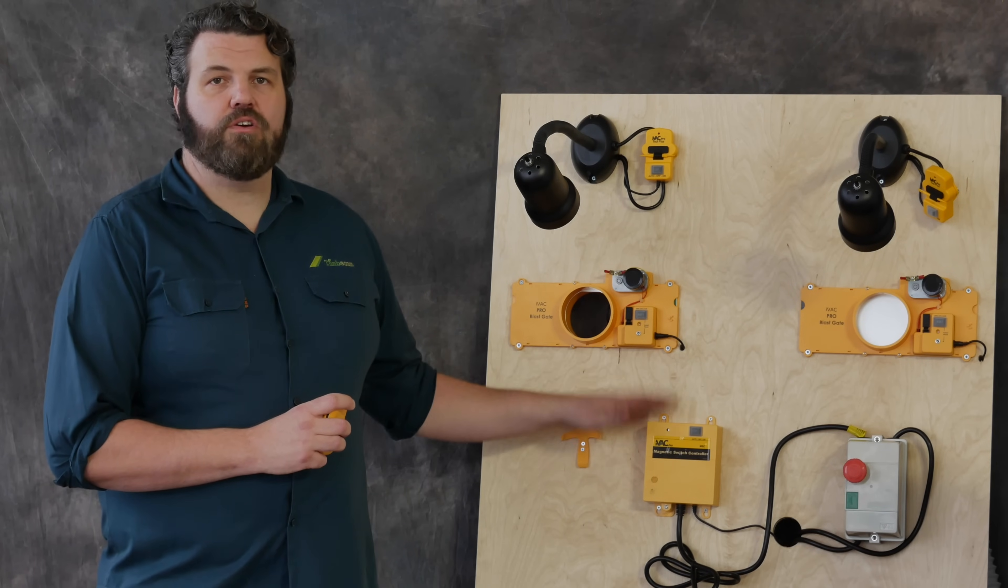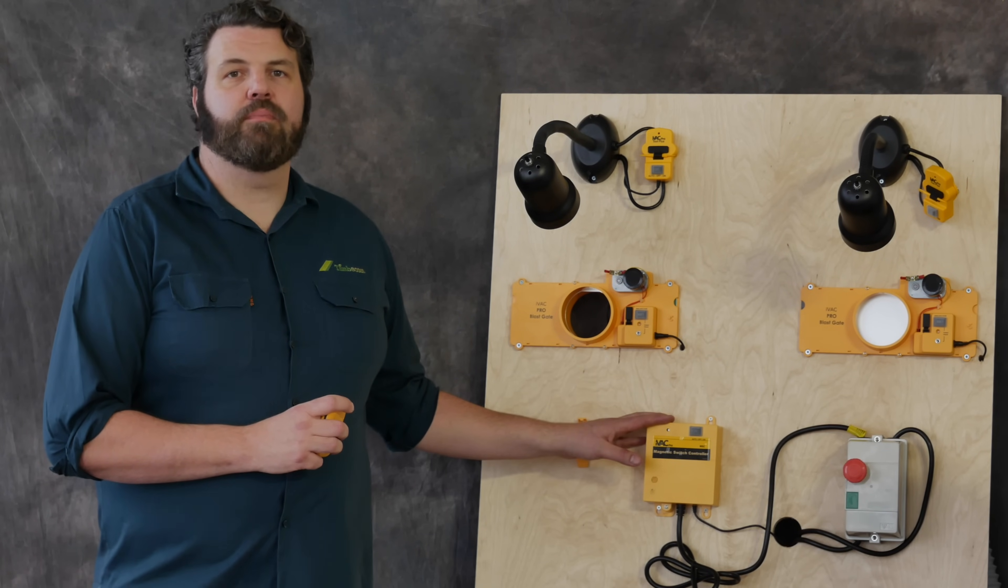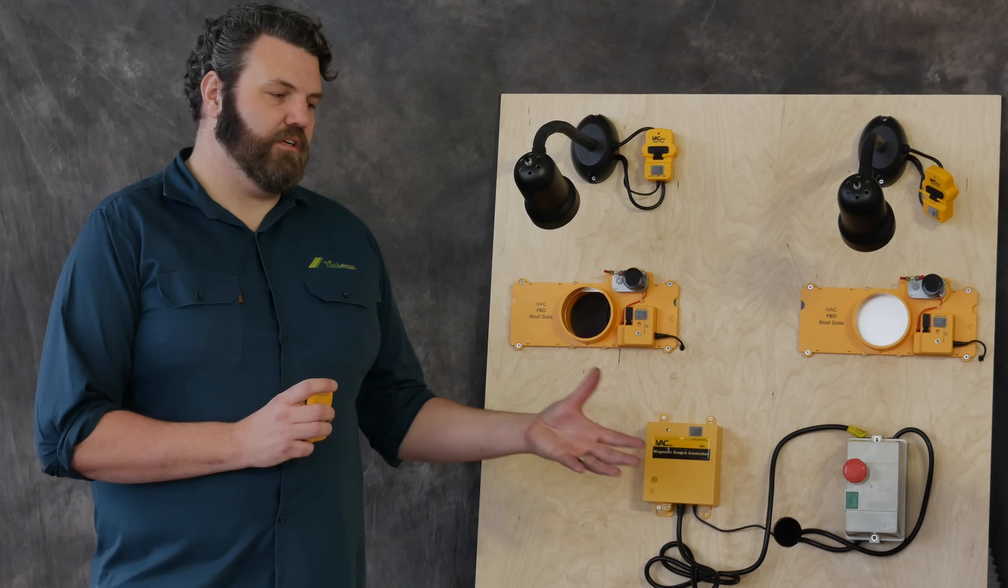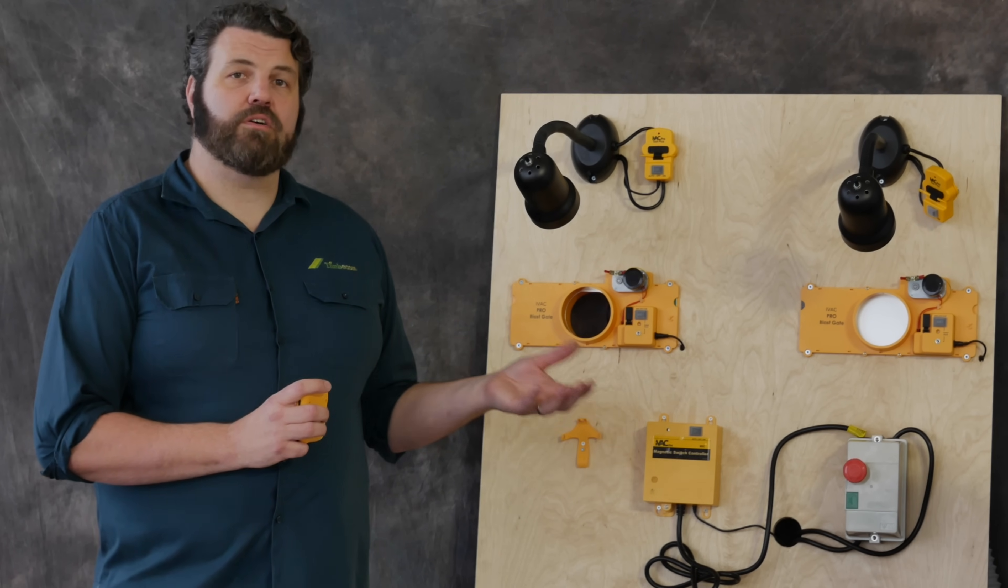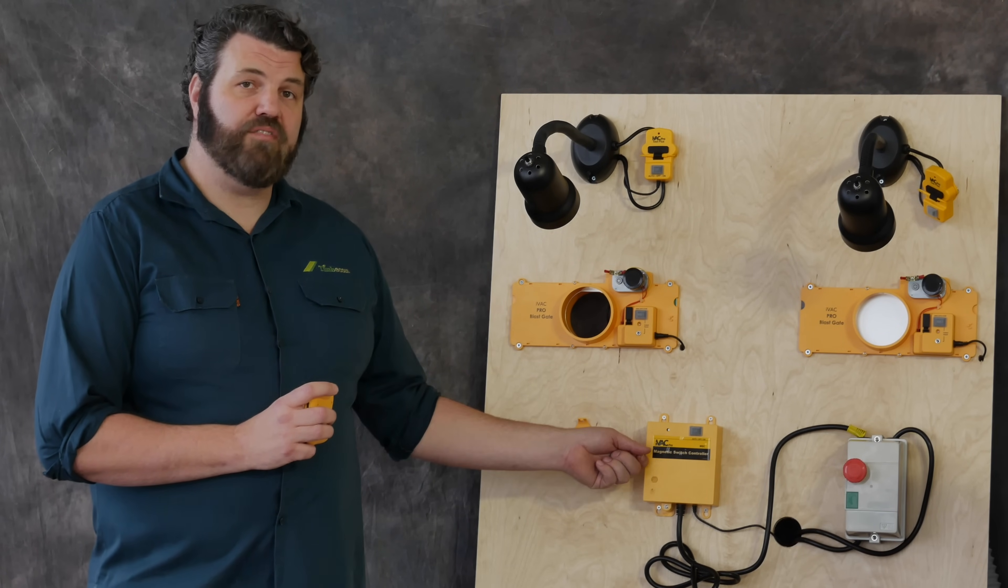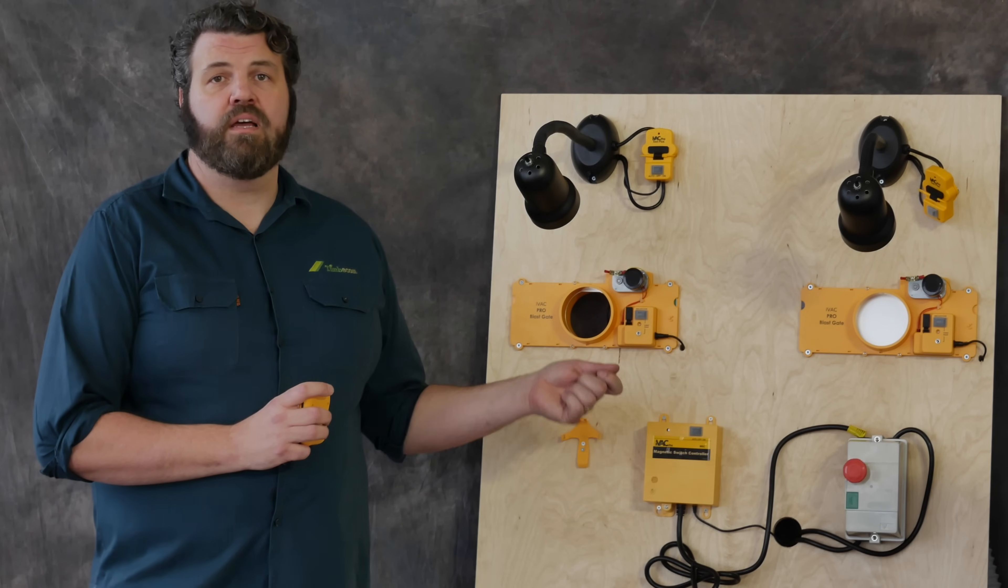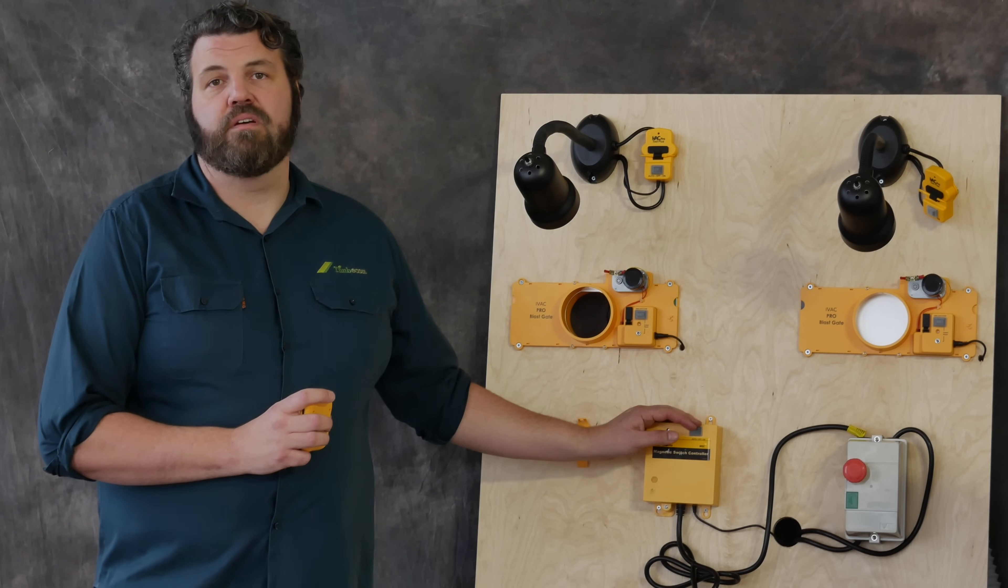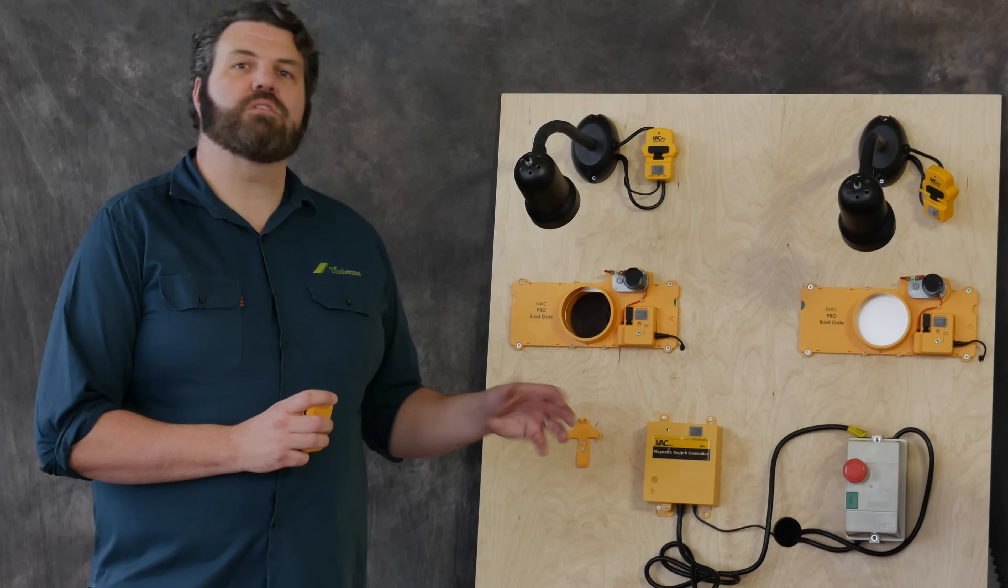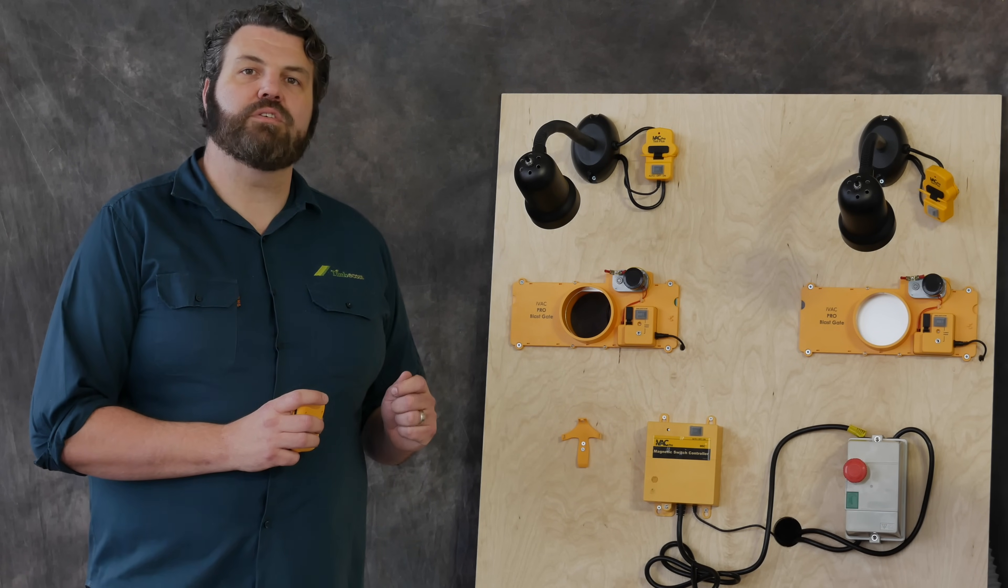The brain of the system is the new IVAC Pro MSC, or magnetic switch controller. In the US market, the dust extractor normally only has direct contact switches. In other words, you plug your dust extractor into the IVAC Pro, then you plug it into the wall, and then the IVAC Pro does the rest. The problem with direct contact switches is if you ever lose power to the system, when you gain power to the system again, the system will automatically turn on.